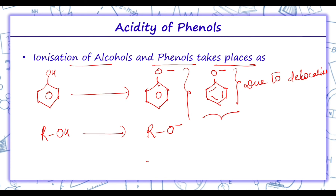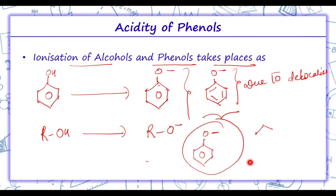There is delocalization in phenoxide, so obviously resonating structures are formed. Due to the resonating structures of the phenoxide ion, there is a charge separation, because of which phenol itself is less stable than phenoxide. Thus, phenoxide is more stable as compared to phenol.